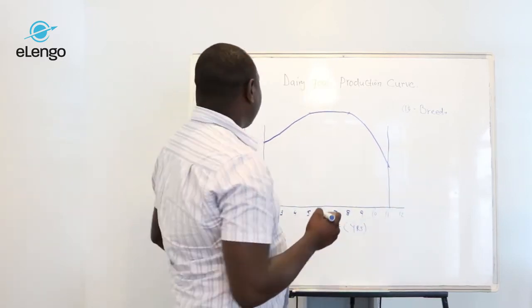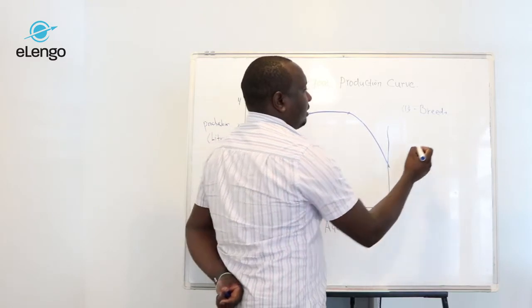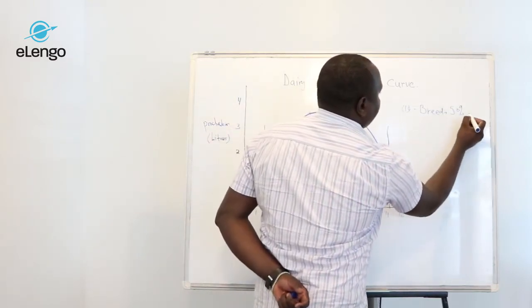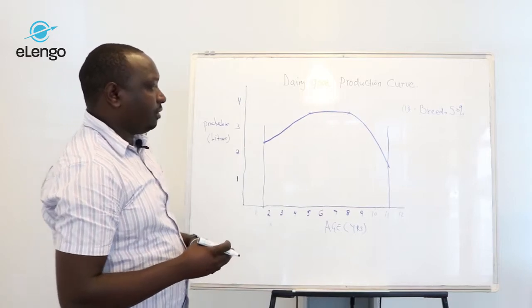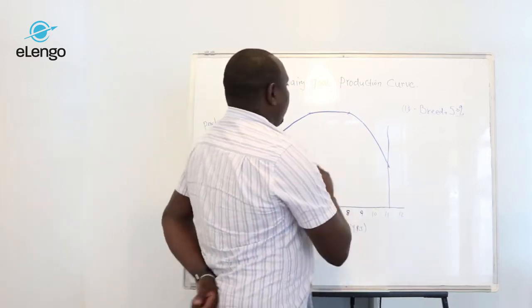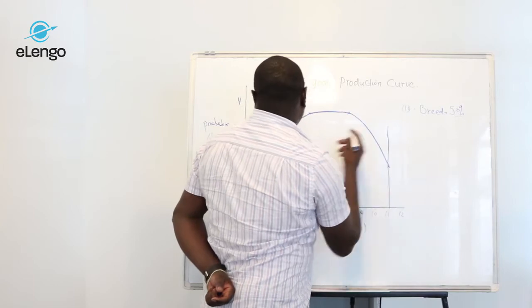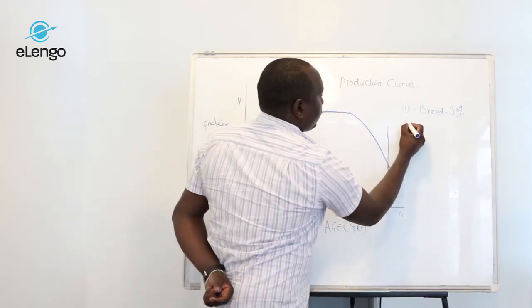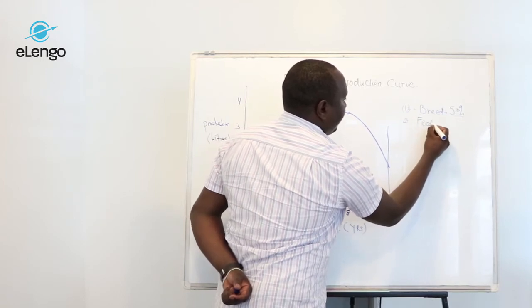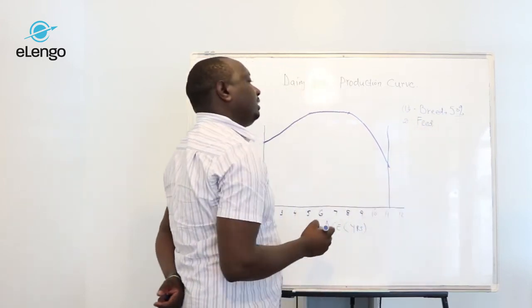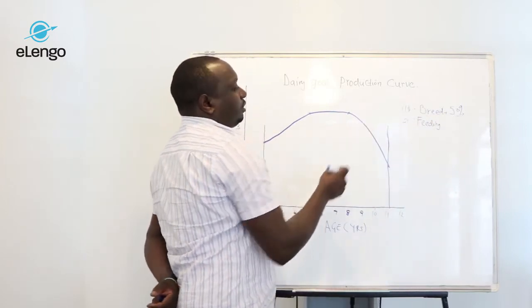Fifty percent, the rest is the management practices and also the feeding. Another factor to consider when it comes to production is the feeding: what the animal is being fed, what quantity, and the hygiene of that particular feed.